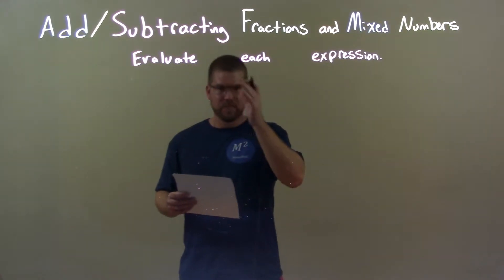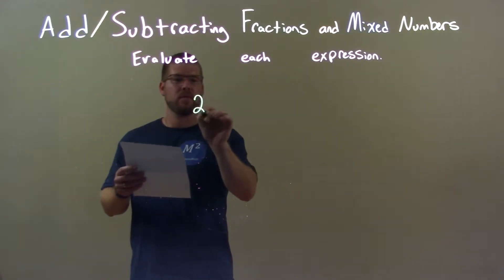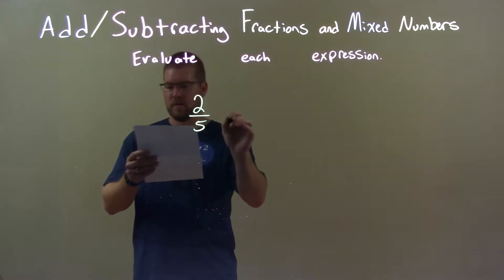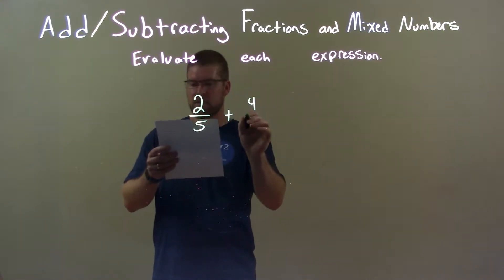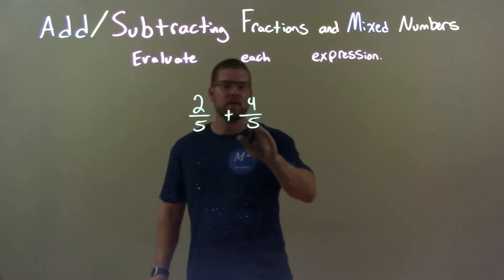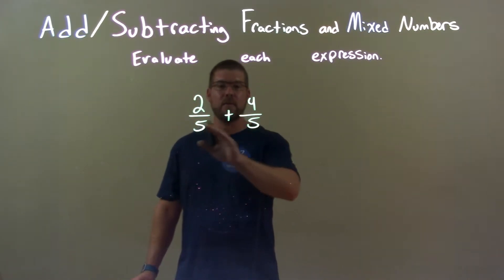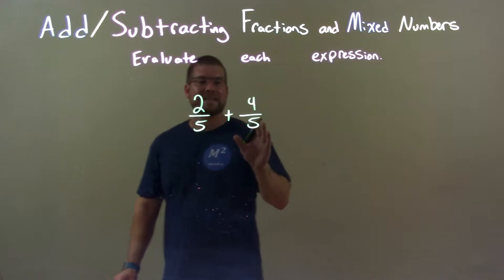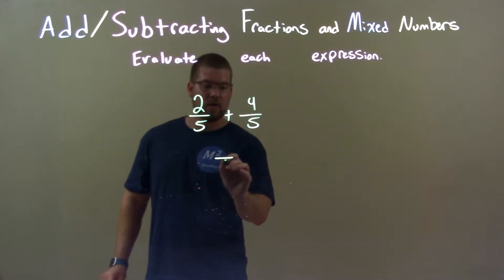If I was given these numbers, 2 fifths plus 4 fifths, well, since the denominator is the same for both of these, that means we can keep that the same on our next step.